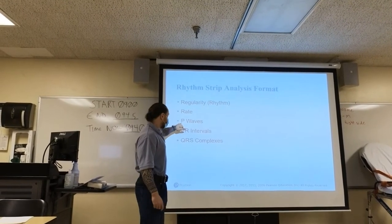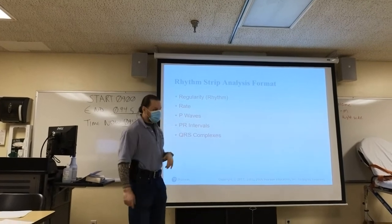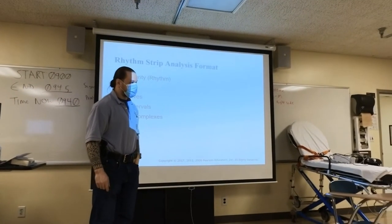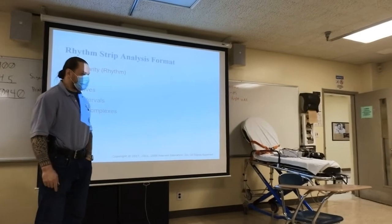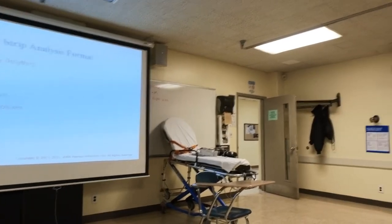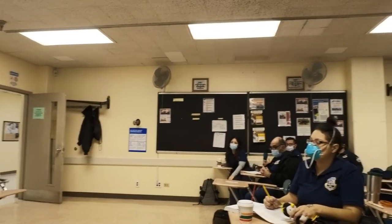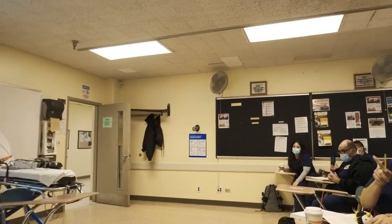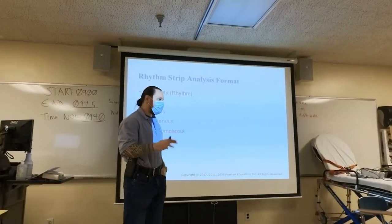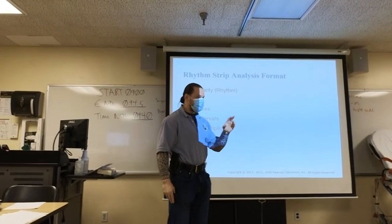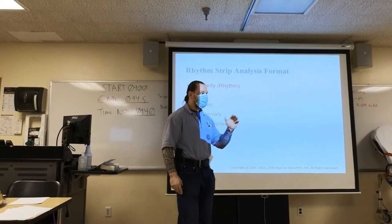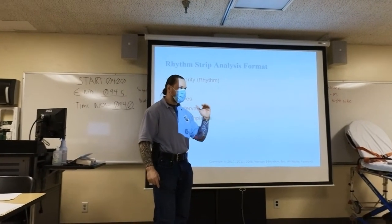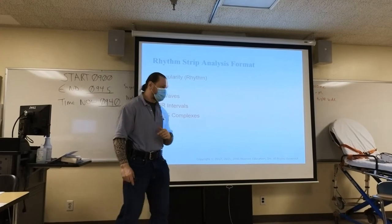Then we're going to see if there's P-waves in front of it. A student asks a question about rate — would you count the ectopic beats? Yes, we're going to count the ectopic beats. I'm going to show you more in-depth once we get to that, but this is only here to give you an overview. Box method for regular rhythm, and if your rhythm is irregular, we do the R-waves in a six-second strip times 10.